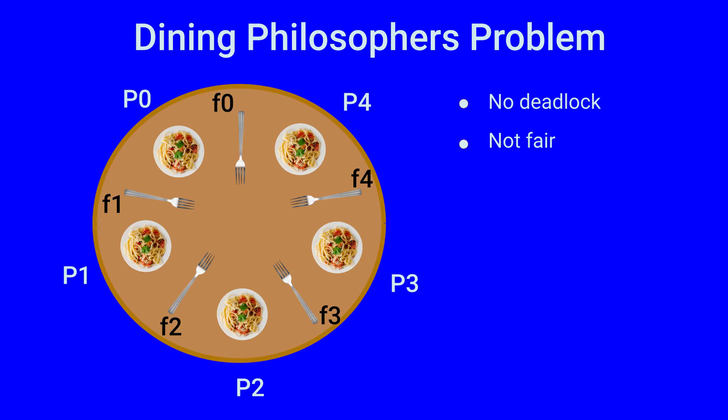Suppose p1 and p4 are eating and p0 wants to eat. Now p4 has fork f0 and p1 has fork f1, the forks required by p0 to eat. So p0 cannot eat until both p4 and p1 stop eating and release the forks. It might so happen that p1 stops eating, releases fork f1 but p4 continues eating.